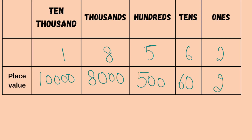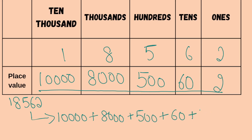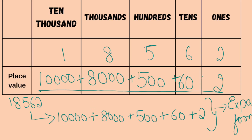So, how do you write the expanded form? If I ask you the expanded form of 18562, what is the expanded form of this number? It is nothing but writing all the place values with a plus sign. So, 10,000 plus 8,000 plus 500 plus 60 plus 2. This is known as the expanded form — you write the place value of each digit and insert a plus sign between each one.